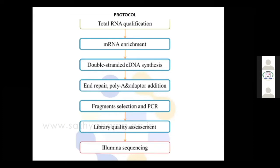So what is the protocol? First, total RNA has to be isolated and quality checked by nanodrop. After RNA quantification and qualification — meaning it has to pass QC — then mRNA enrichment is performed. A higher amount of mRNA is needed because cDNA synthesis — complementary DNA synthesis — is done from the mRNA. So mRNA enrichment is carried out first.